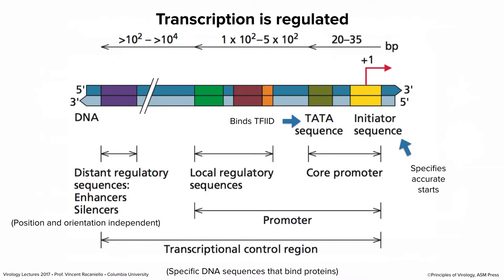There are lots of control sequences involved in transcription. About 20 to 35 base pairs upstream of the initiator is a TATA sequence, which binds a cellular protein called TF2D, helping recruit the polymerase to the initiator sequence. The TATA sequence and the initiator together constitute the core promoter. From 100 to 500 bases upstream are local regulatory sequences, and together the core and local elements constitute what's officially called a promoter.